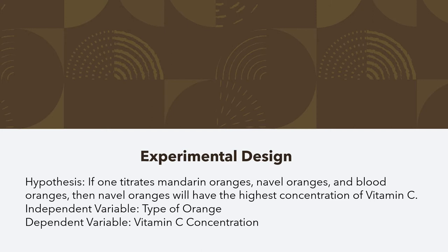For my experimental design, I hypothesize that if one titrates mandarin oranges, navel oranges, and blood oranges, then navel oranges will have the highest concentration of vitamin C. My independent variable was the type of orange, and my dependent variable was the vitamin C concentration.